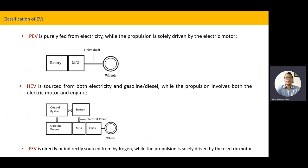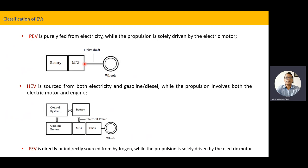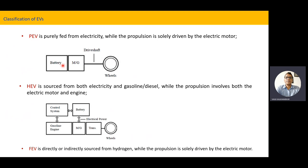The pure electric vehicle is powered from electricity and propulsion is provided by electric motor, as shown in this diagram. This is the battery and this is the motor or generator. Whenever we get regenerative braking, at that time we can generate electricity. During regeneration, while we are applying the brakes, it is regenerative braking — electrical braking — and that will feed supply back to the battery. So this is a pure electrical vehicle.